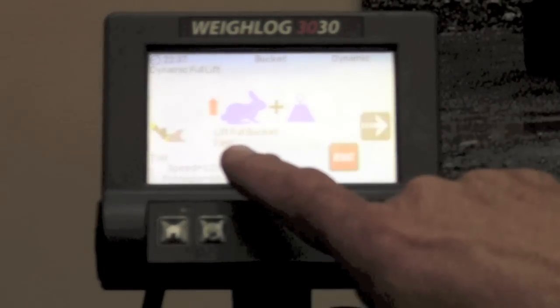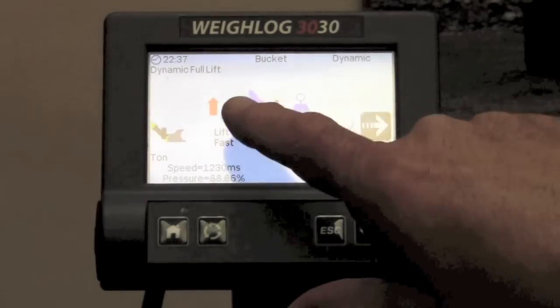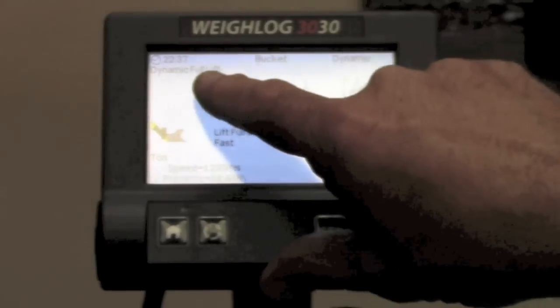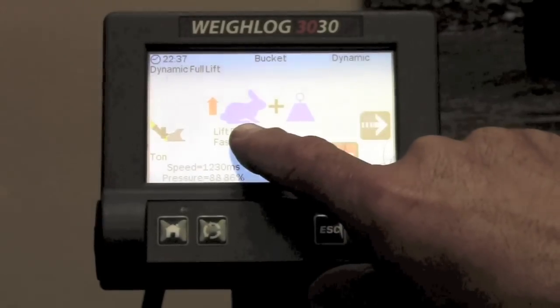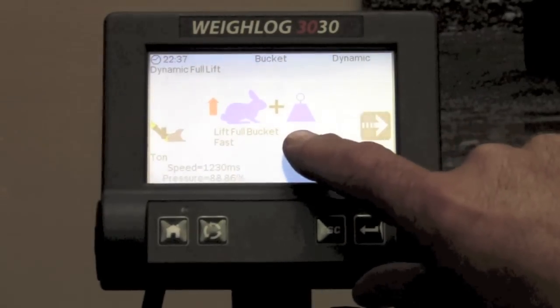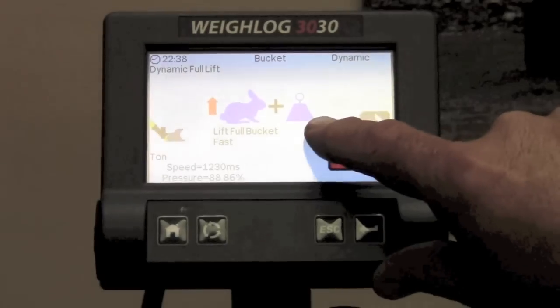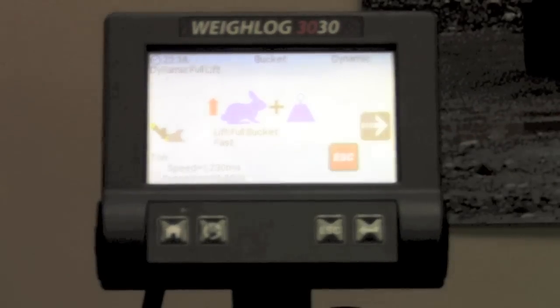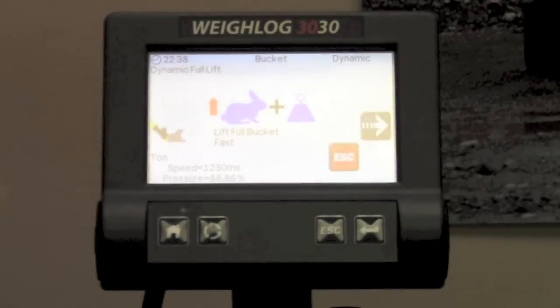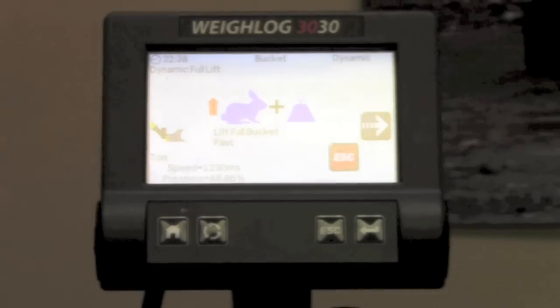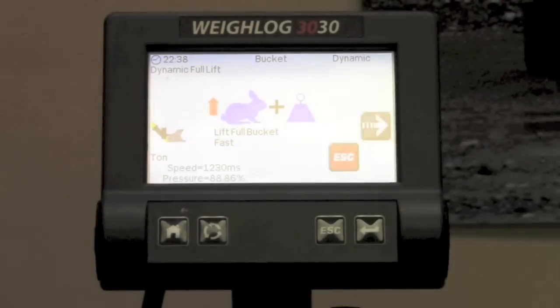Immediately it brings up the first screen which says dynamic full lift right up here and you can see that it is asking for a fast lift, hence the rabbit. You can tell that it's asking for weight to be in the bucket. So at this point you do not need to know what the weight is. You just need to have a full bucket.